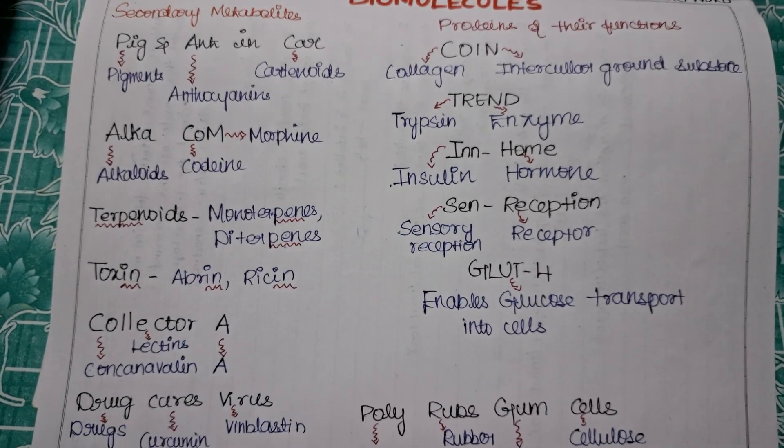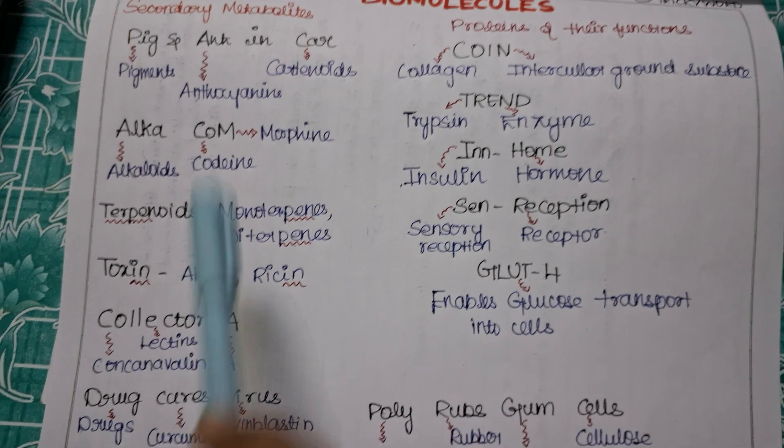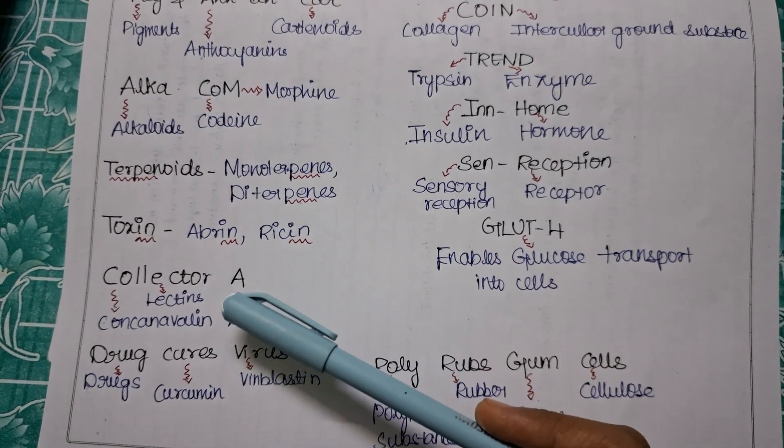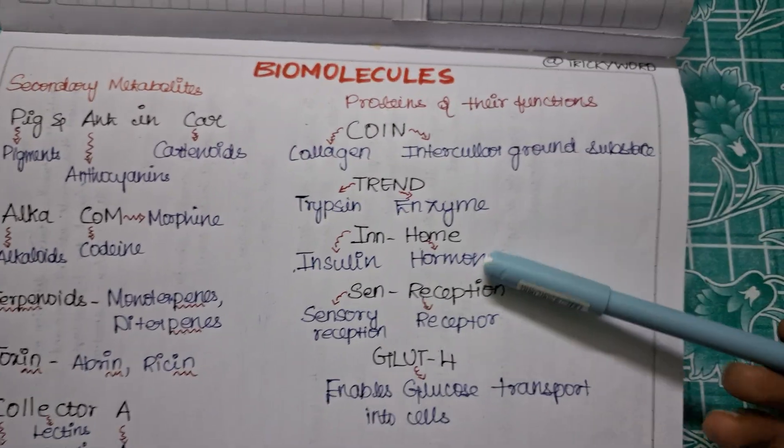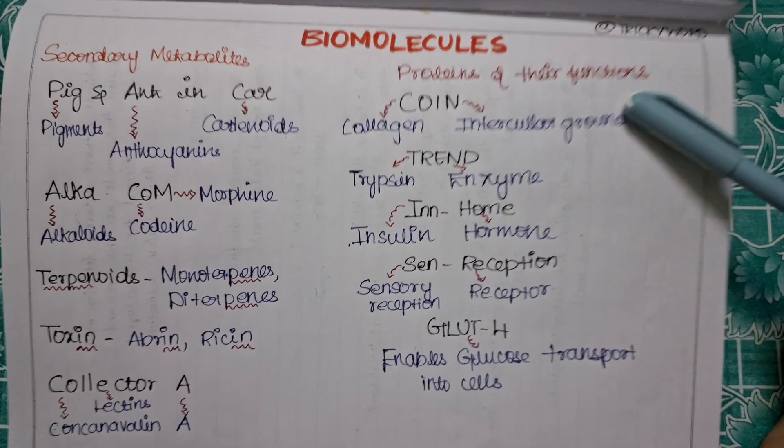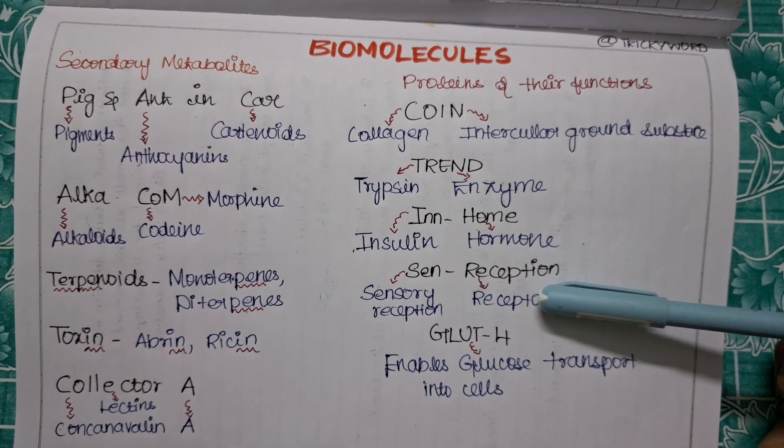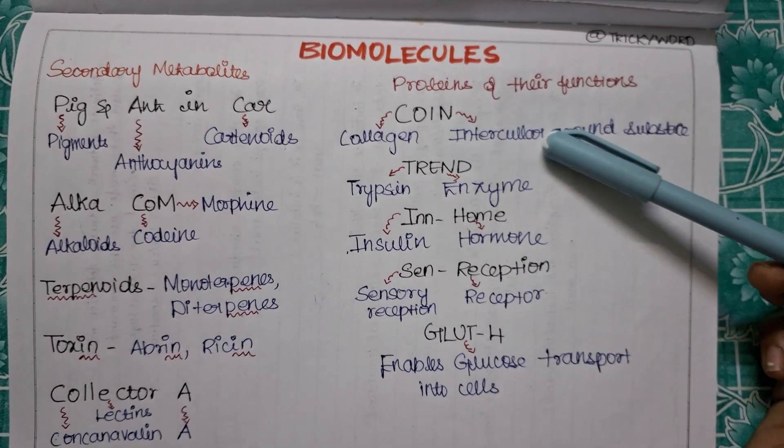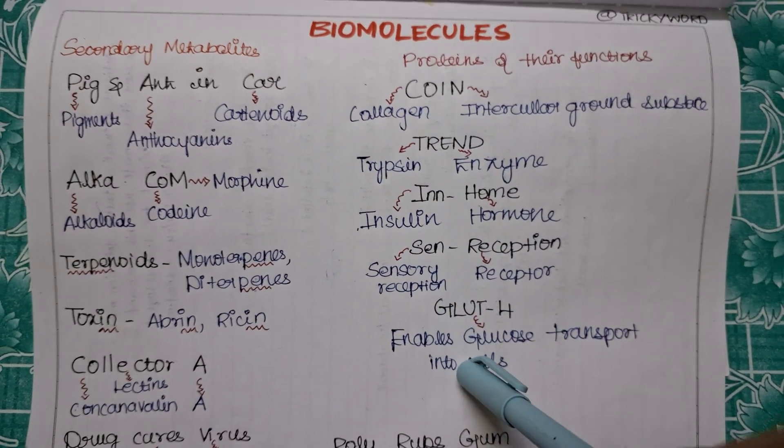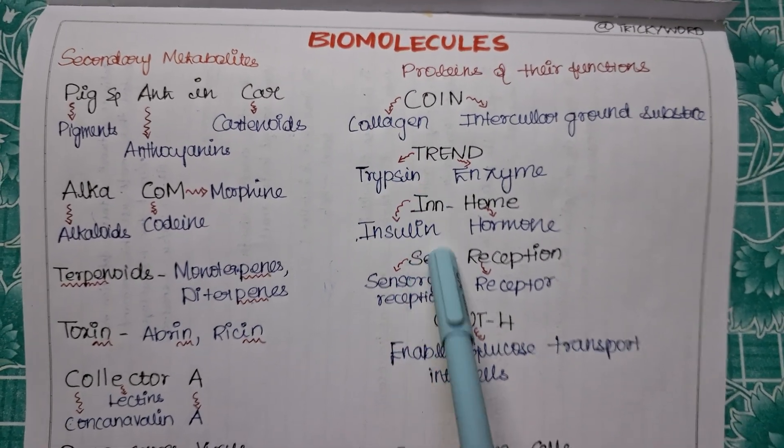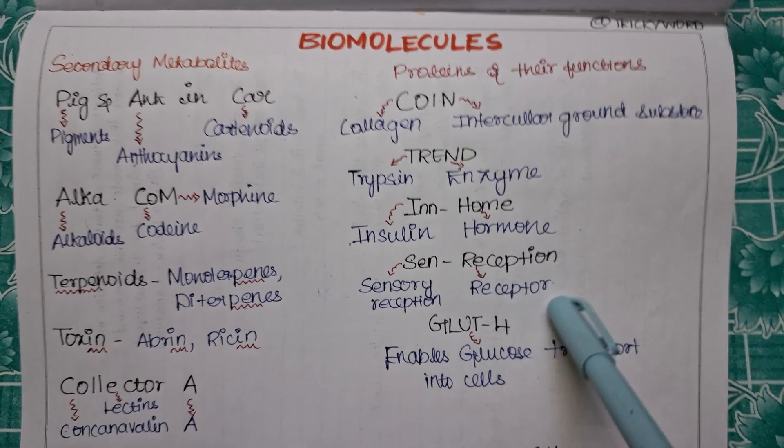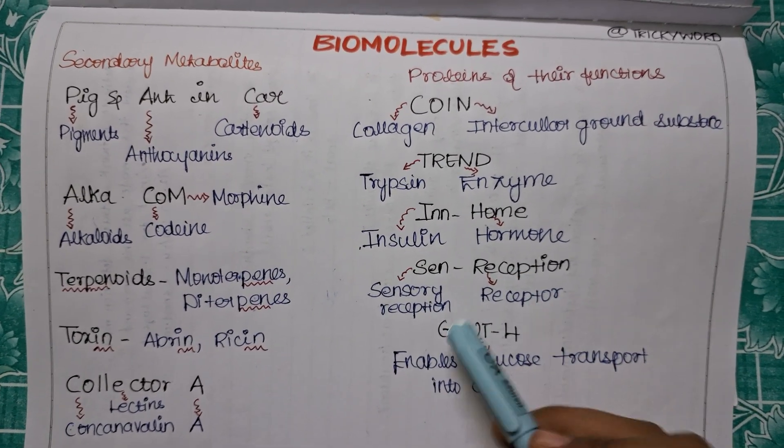I have covered all the things in your secondary metabolites, I guess - your pigments, alkaloids, terpenoids, toxins, lectins, drugs. Now we will move on to the last trick for the biomolecules, that is your proteins and their functions. Now the first trick will be COIN. COIN means C for collagen.